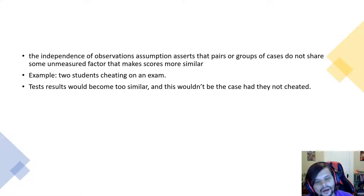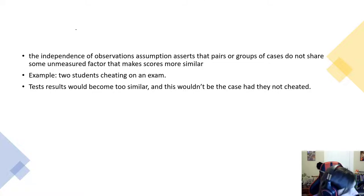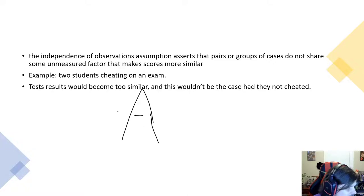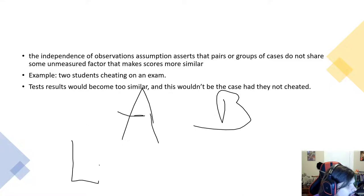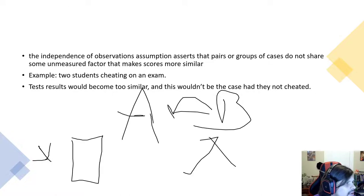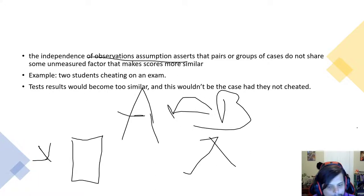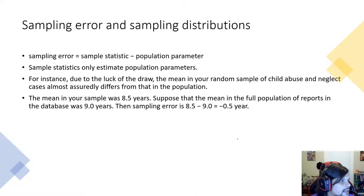The independence of observations assumption asserts that pairs or groups of cases do not share some unmeasured factor that makes scores similar. Simply put: data points shouldn't influence each other. For example, if student A has all the answers and student B copies them on an exam, student B isn't being tested at all — that violates independence and would compromise your sampling.